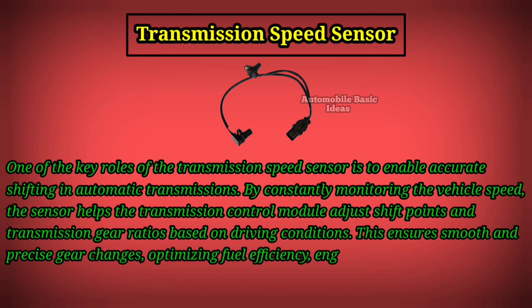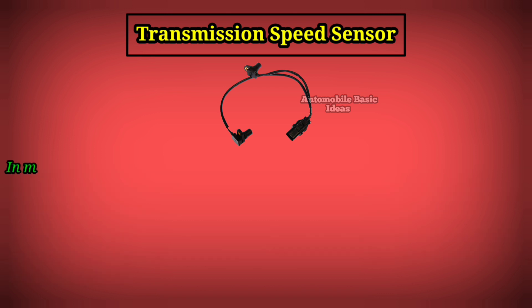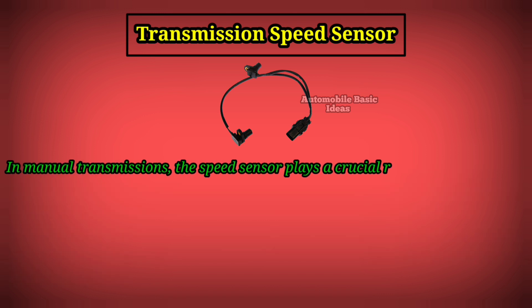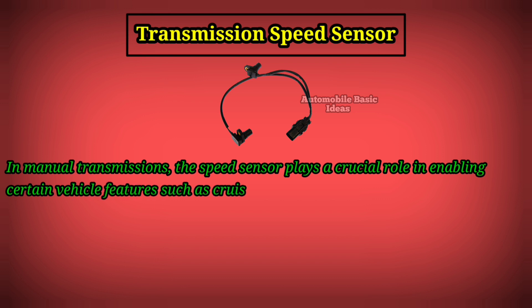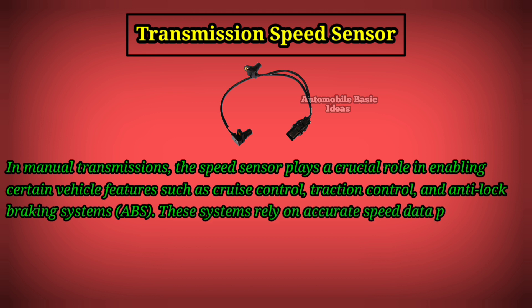This optimizes fuel efficiency, engine performance, and overall driving experience. In manual transmissions, the speed sensor plays a crucial role in enabling certain vehicle features such as cruise control, traction control, and anti-lock braking systems (ABS).